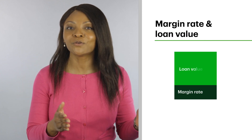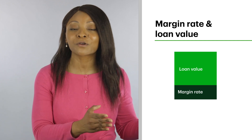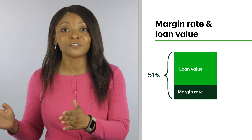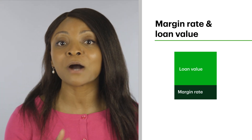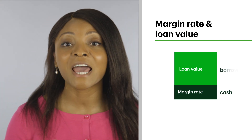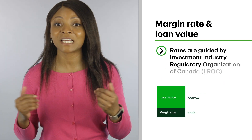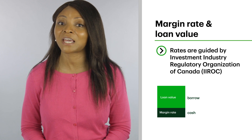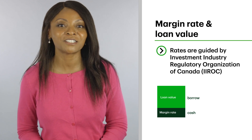But if you're using margin to buy an investment, here's what you should know first. Every investment has a margin rate and a loan value. A simple formula to remember is that margin requirement rate plus loan value rate equals 100%. Margin rate is the amount you pay from your own cash, and loan value is the amount you're borrowing from the broker. These rates are guided by the Investment Industry Regulatory Organization of Canada, or IIROC, but brokers can set higher margin requirements too.